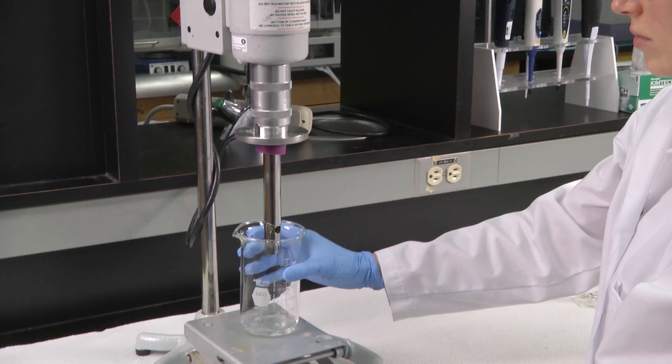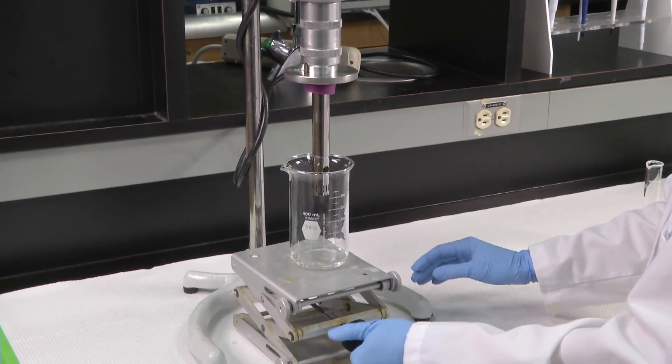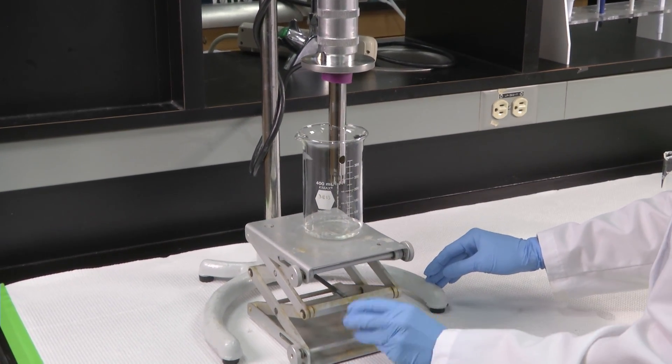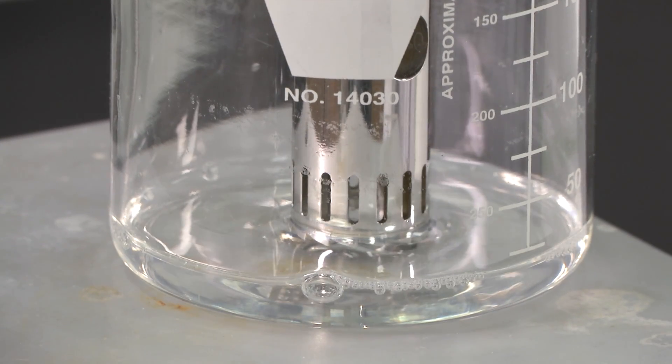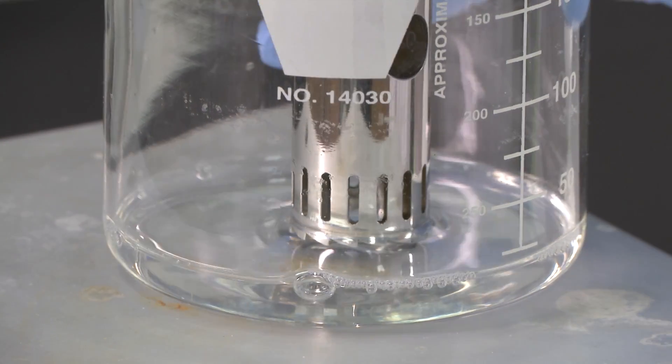Place the beaker under the homogenizer probe, positioning the beaker so that the probe blades are immersed in the solution. Make sure the probe is not in contact with the bottom of the beaker.